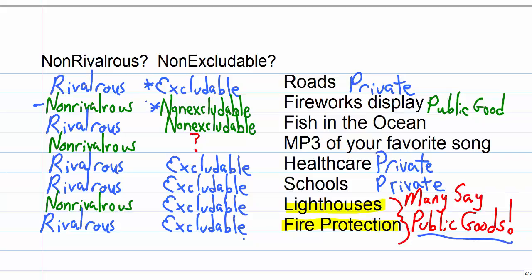Fish in the ocean are rivalrous because the same people can't catch the same fish, right? And also non-excludable because it's very hard to keep people from going way out in the ocean and fishing. So fish in the ocean they're not a private good and they're not a public good. There's something kind of in between.